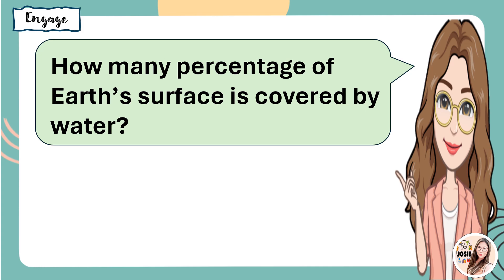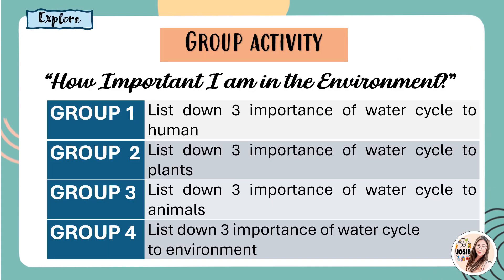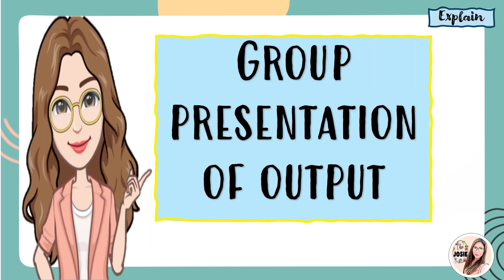The hydrosphere, or water sphere, covers three-fourths of Earth's surface. To better understand our lesson, let's have a group activity entitled 'How Important I Am in the Environment.' For group one, list down three importance of the water cycle to humans. For group two, list down three importance of the water cycle to plants. For group three, and now let's have your group presentation.